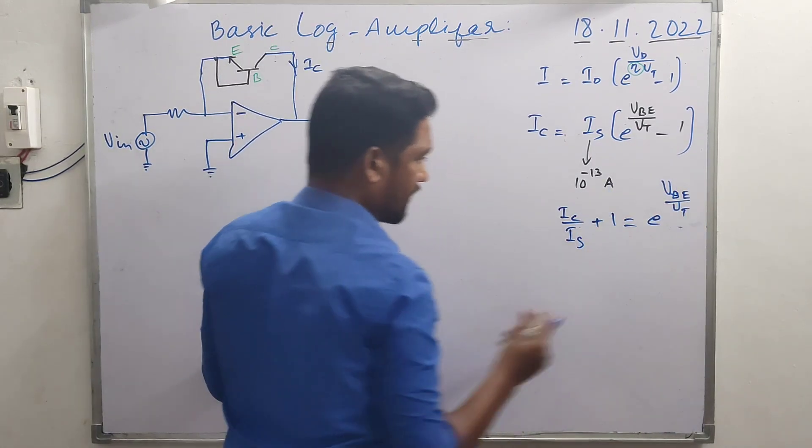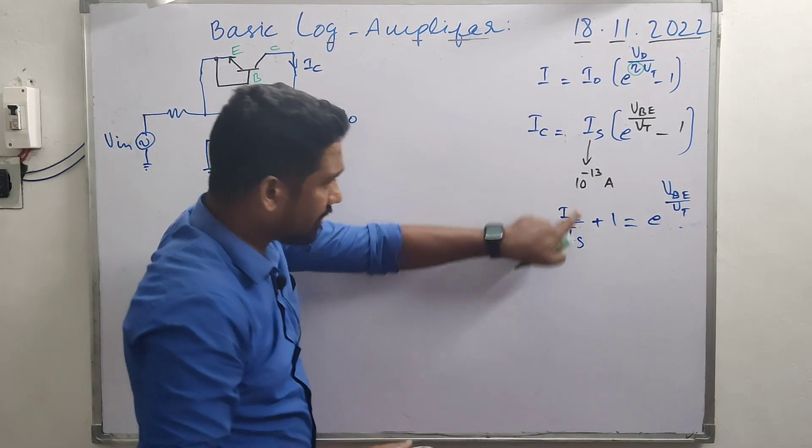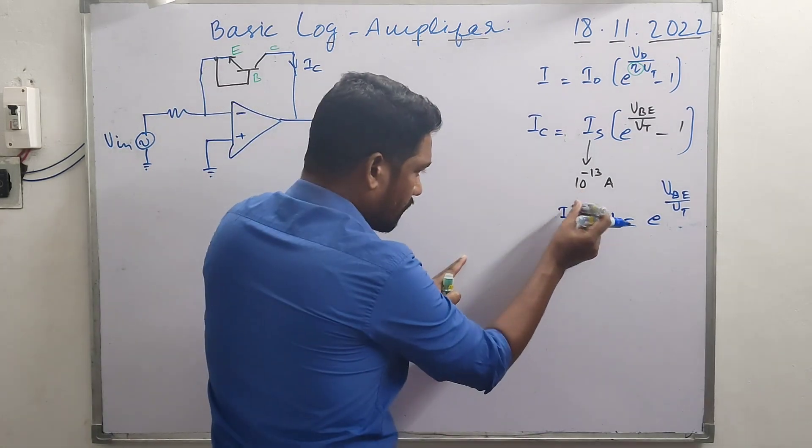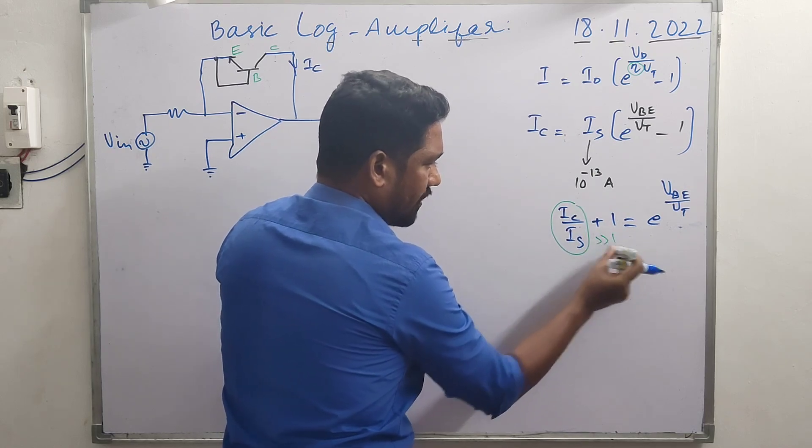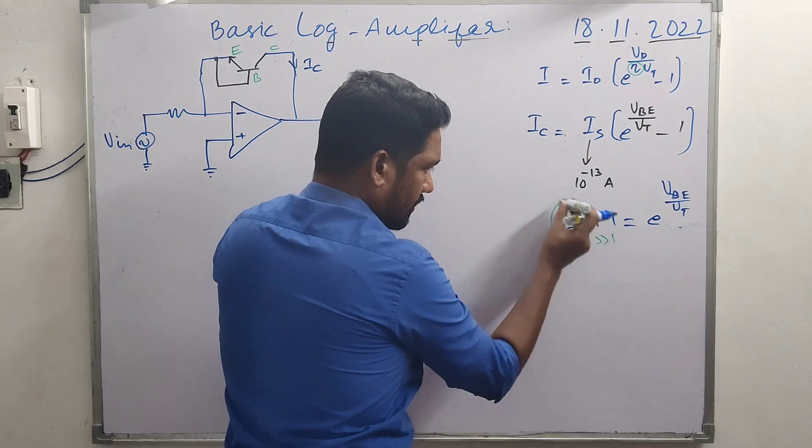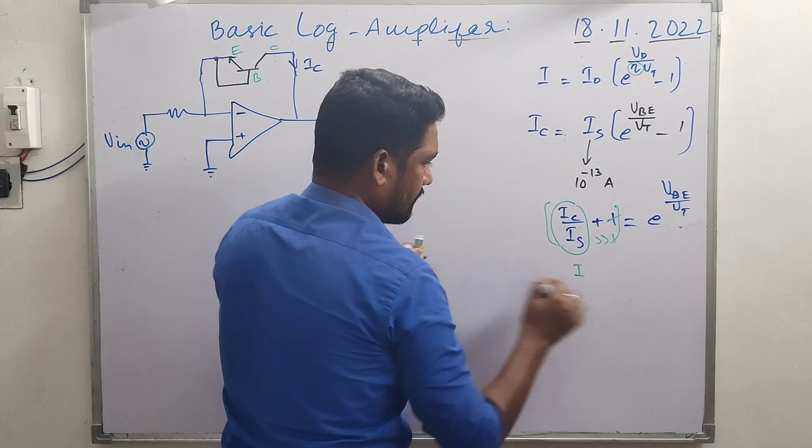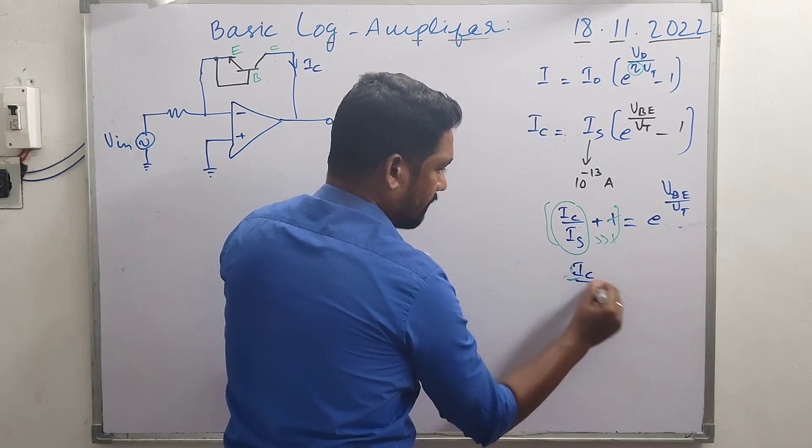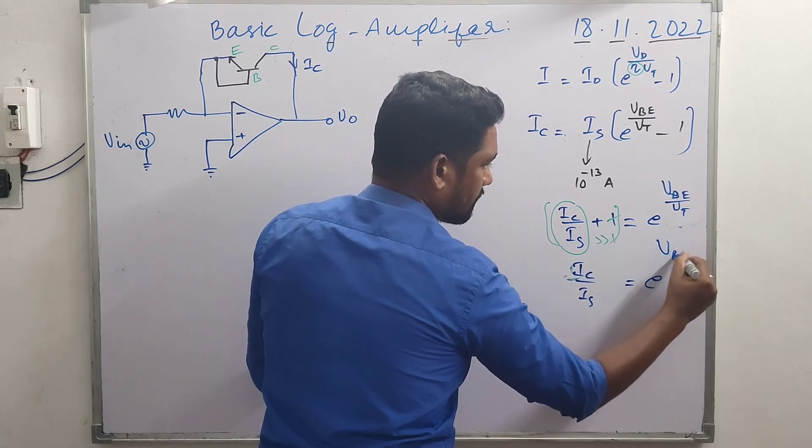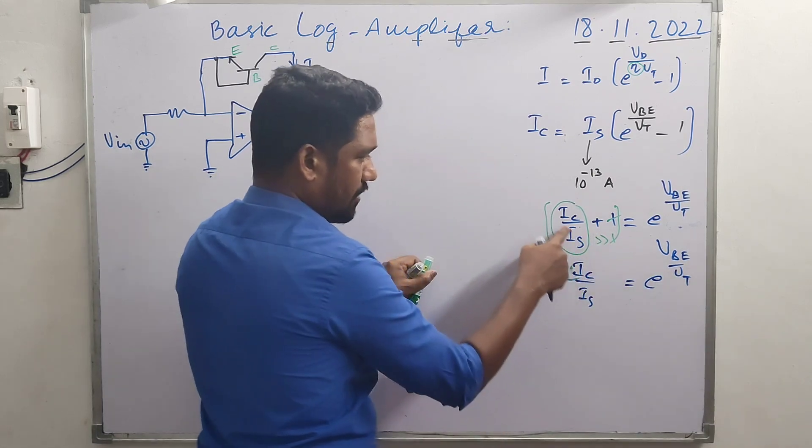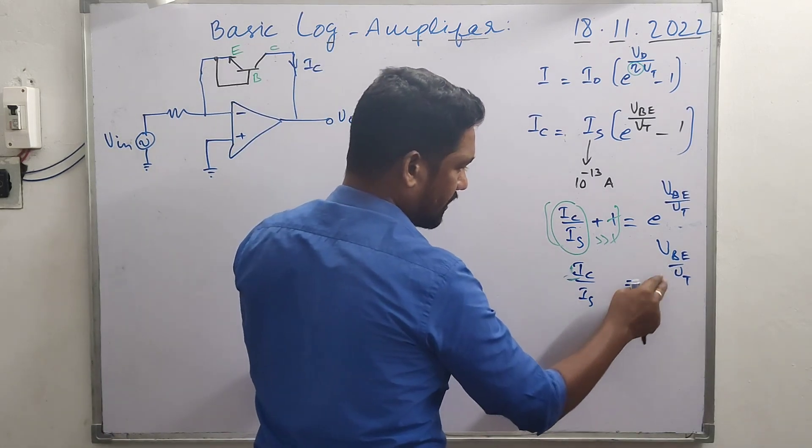To be more precise, the saturation current value is very low, so this entire ratio will be very much larger than one. This term of one is negligible. We can write I_C/I_s = e^(V_BE/V_t). This ratio is very much higher than one, so that one is neglected.